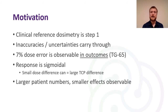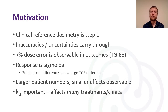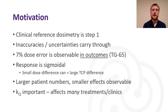When patient numbers increase — so a larger patient cohort — smaller effects can be observable as they become more statistically significant. KQ is important here because it affects many different treatments across many different clinics. Any country that does not have a direct calibration service means that everyone is using the same KQ set from a protocol, and if there's an error in that, it will propagate through to any clinic using that KQ value, resulting in an error or larger uncertainty in their dosimetry. Maximising accuracy here is obviously very important.